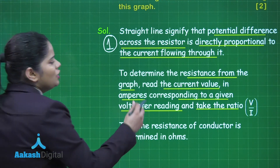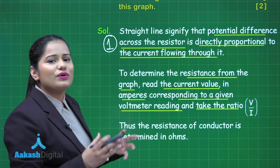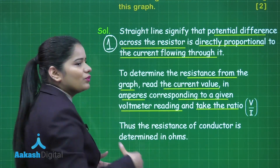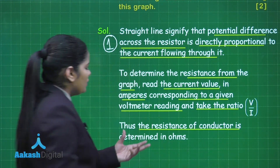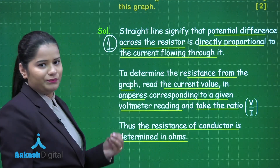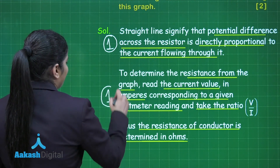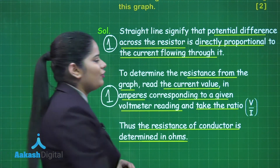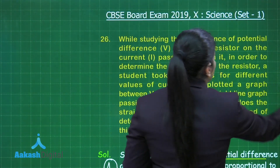The slope of the V-I graph gives the resistance of the resistor used in the experiment. You can write that to find the resistance, the student needs to calculate the slope of the drawn graph, and the resistance of the conductor will be determined in ohms. This is how you score one mark for this part and two out of two for this choice of question number 26.